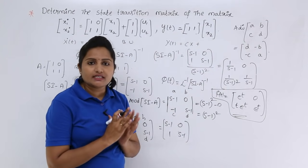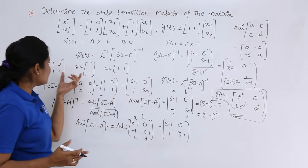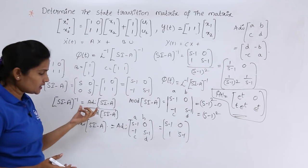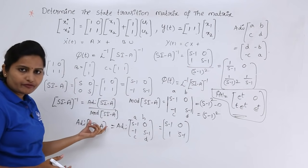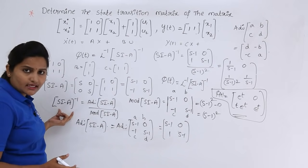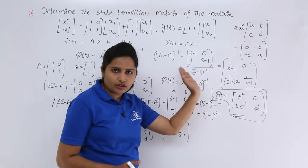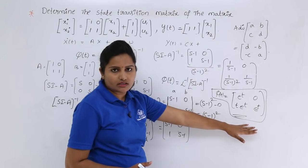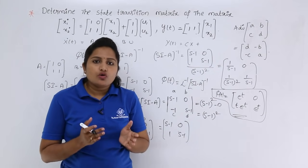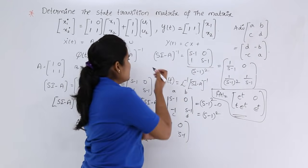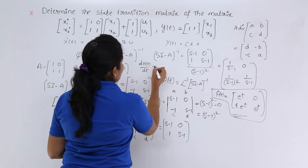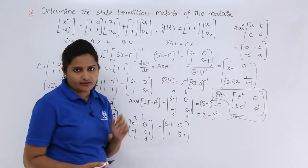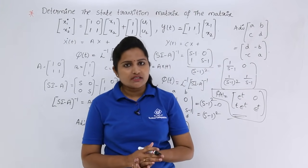To summarize the procedure: from the model, extract the A matrix. Compute sI - A, then calculate its adjoint and determinant. Taking adjoint divided by determinant gives (sI - A) inverse. Taking the inverse Laplace transform gives the state transition matrix φ(T). This state transition matrix satisfies the linear homogeneous state equation dx(T)/dt = A·x(T).